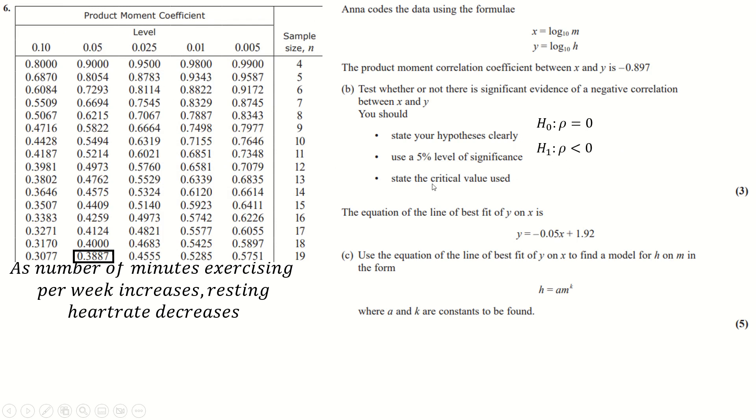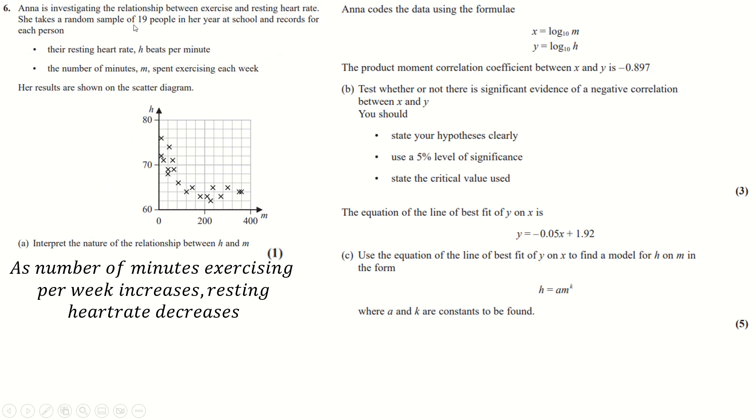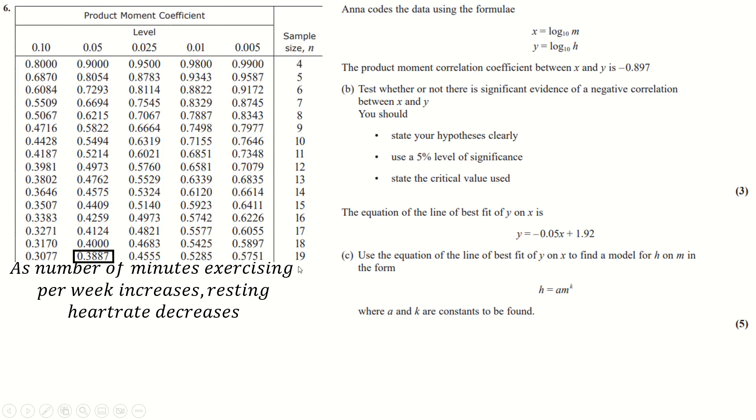H0 is that the coefficient is actually 0. Alternative hypothesis is that it's less than 0, it's still a one tail test. So I'm looking for one tail is 0.05, N is 19. So 19 and 0.05 is that. If our number is bigger than that then we can take the alternative hypothesis which it is, so there is evidence of negative correlation, quite a lot of evidence actually.